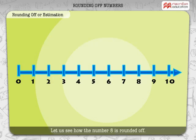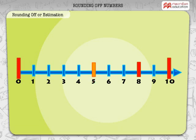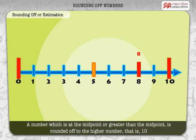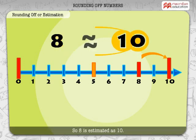Let us see how the number 8 is rounded off. 8 comes between 0 and 10. The midpoint between 0 and 10 is 5. A number which is at the midpoint or greater than the midpoint is rounded off to the higher number, i.e. 10. So, 8 is estimated as 10.